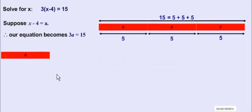So x must be a bigger quantity than a. So let's assume that this is our x and I am taking away 4 from this and what I will be left with on this part will be a.